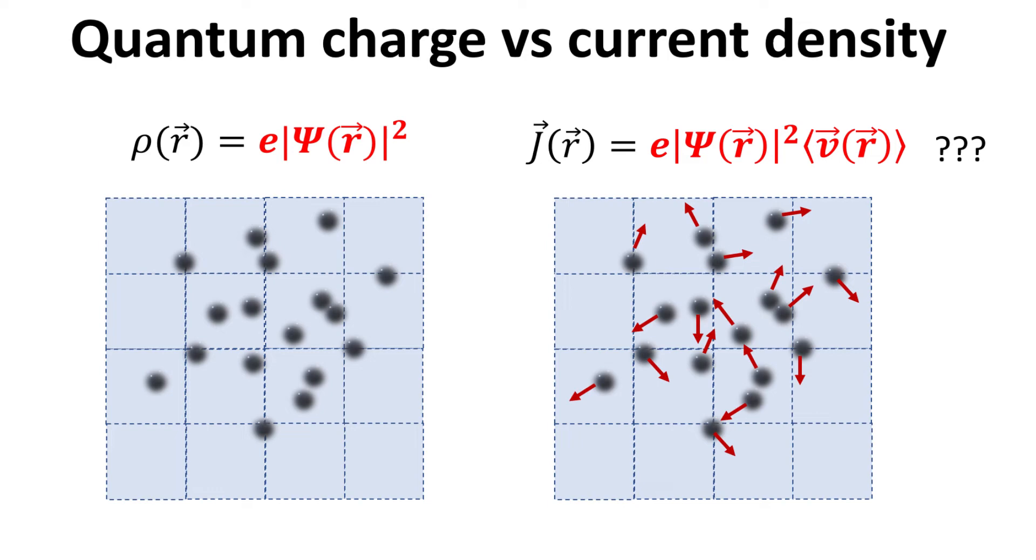Now, in quantum mechanics, the particle density is being described by the probability density function. Thus we can replace n over A by the probability density function, which is given by the modulus square of the wave function.